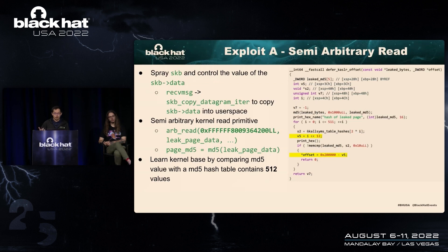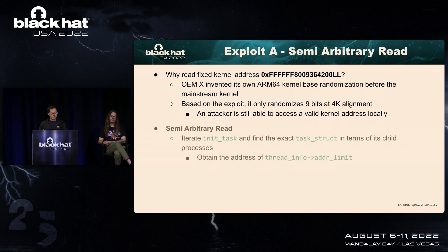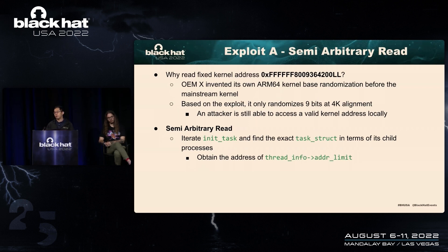For exploit A, it reads from a fixed kernel address, reads a page-size of data, calculates the MD5 hash value, and compares with a hash table of 512 values — so you can calculate the kernel base offset. We believe this is because OEM invented ARM64 kernel base randomization before the mainstream kernel, and based on the exploit it only randomizes 9 bits at 4K alignment. So an attacker is still able to access a valid kernel address. Having a semi-arbitrary read, the exploit iterates through task structures to find the exact task structure from its own process and get the address of the address_limit.